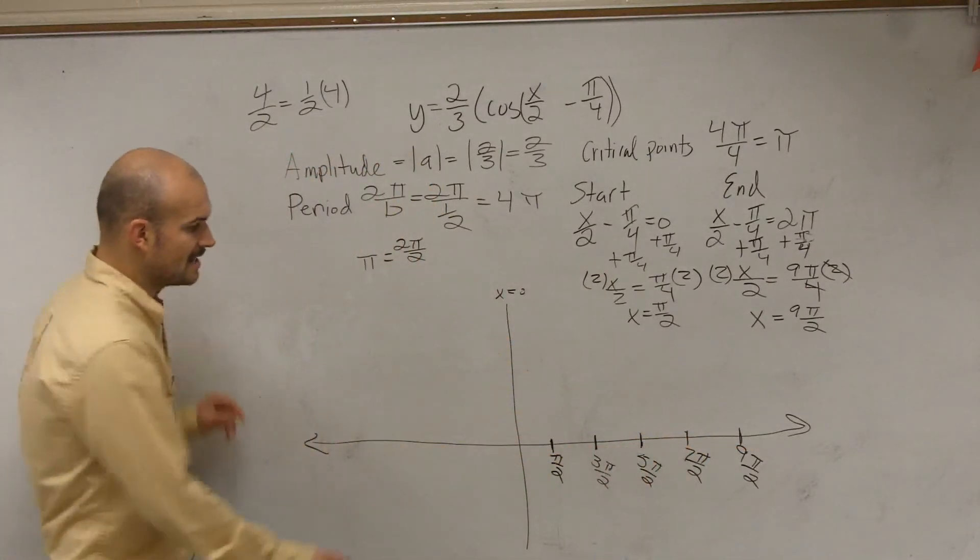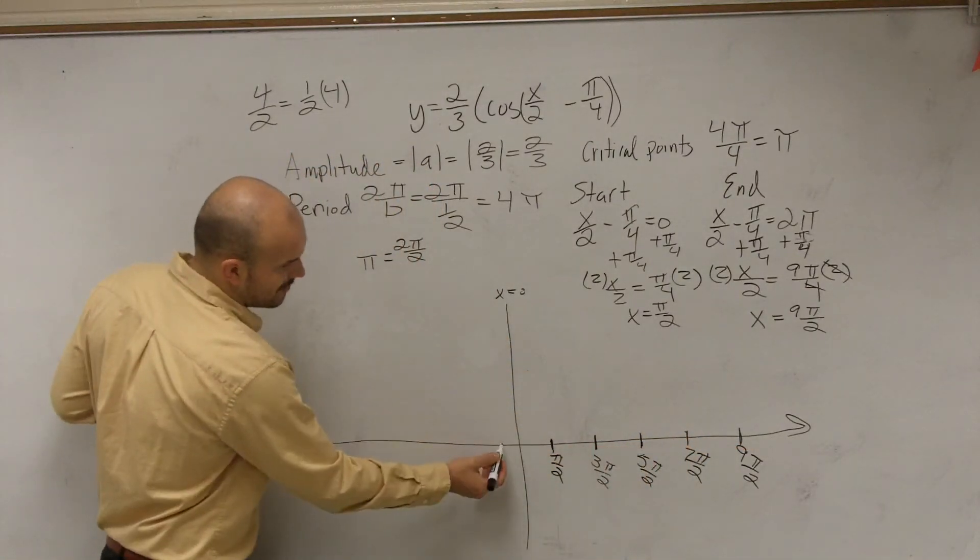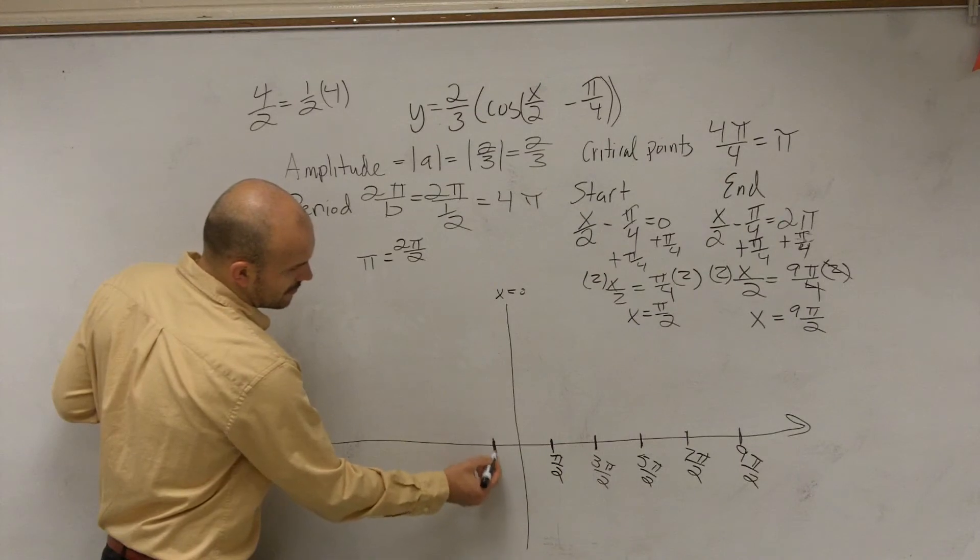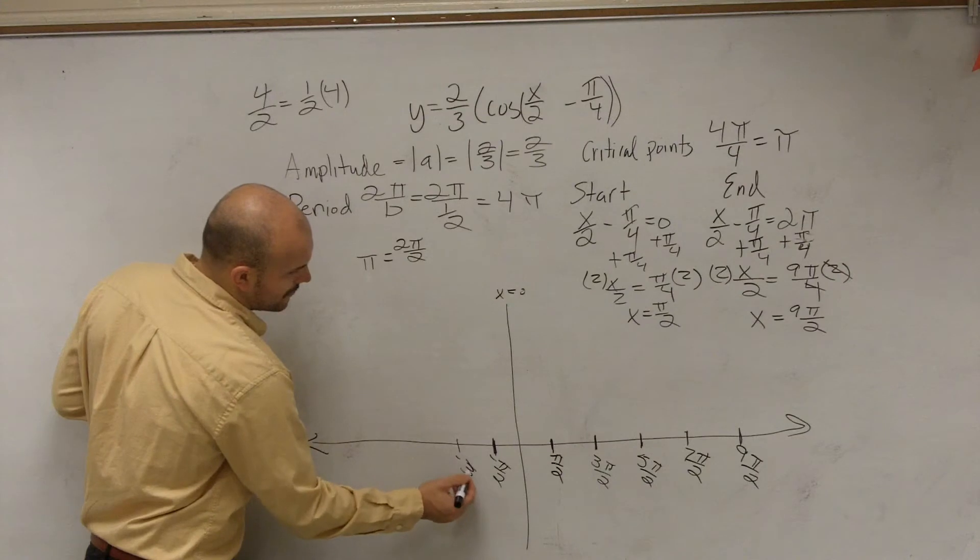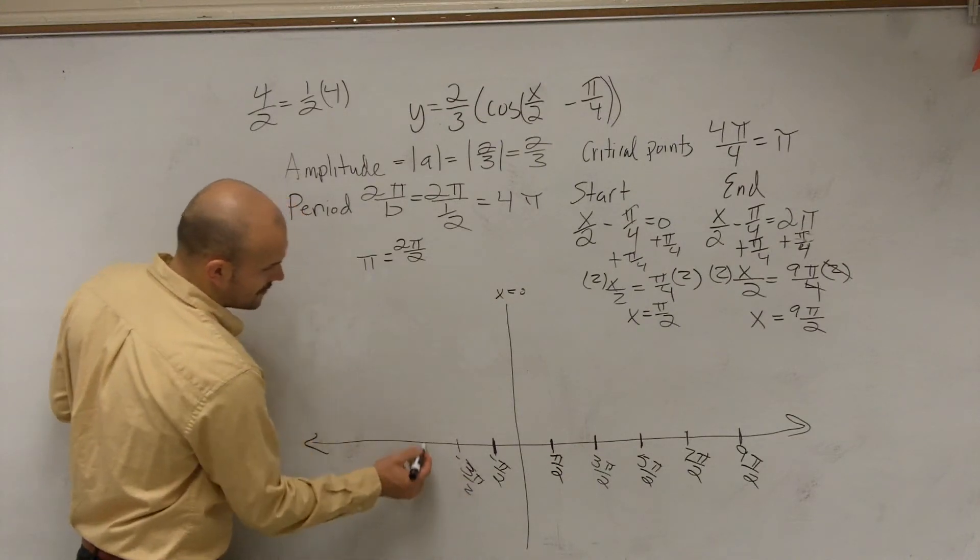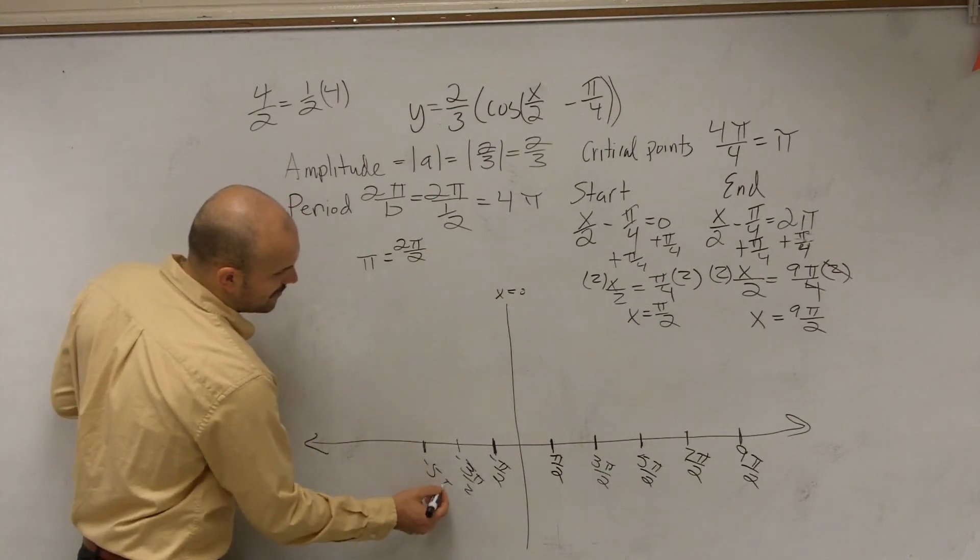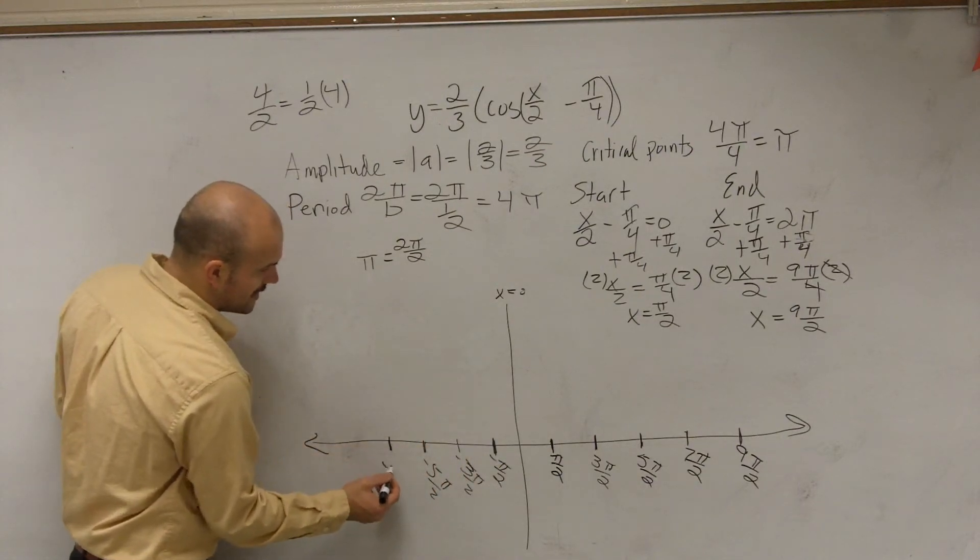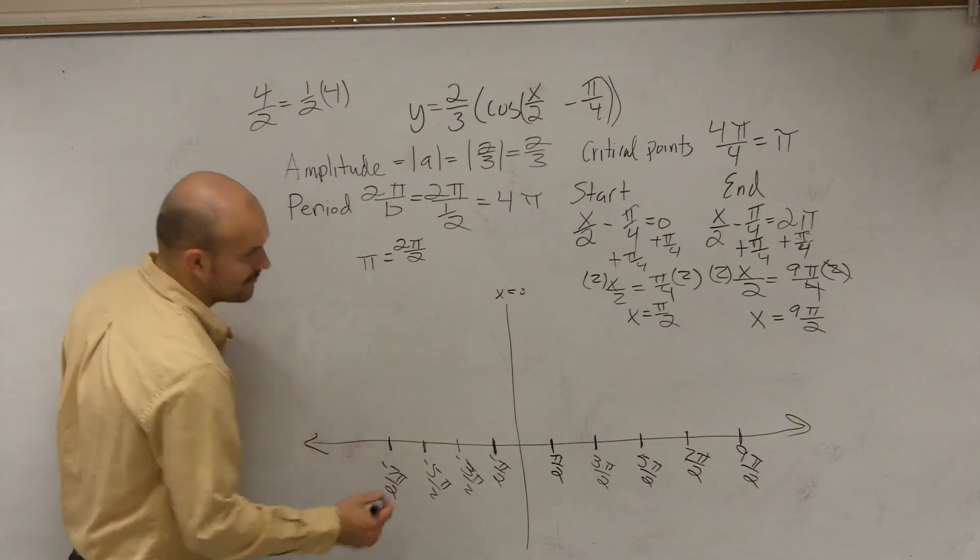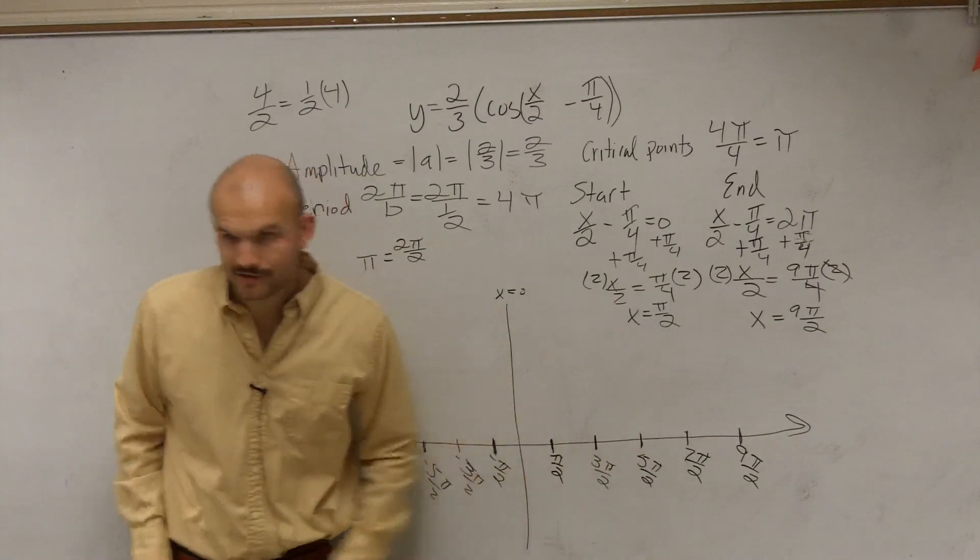We could also go in the negative direction. If I subtracted a pi, I would have negative pi over 2, negative 3 pi over 2, negative 5 pi over 2, and negative 7 pi over 2.